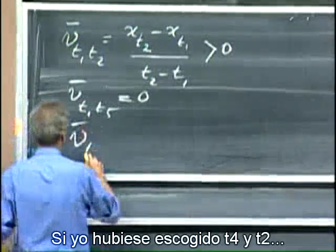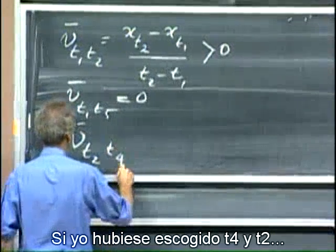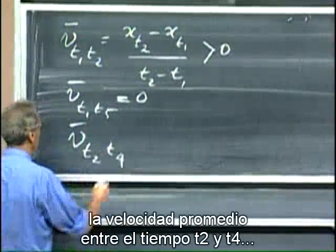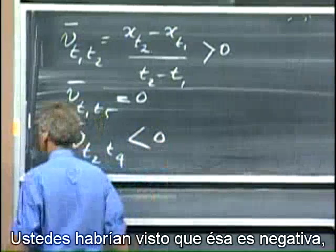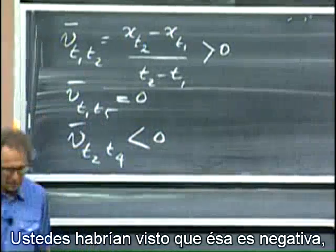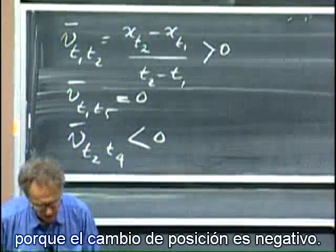If I had chosen t4 and t2, average velocity between time t2 and t4, you would have seen that that is negative because the upstairs is negative.